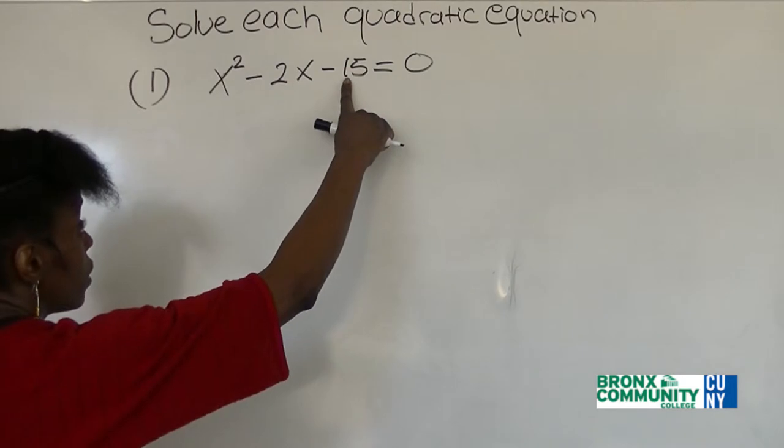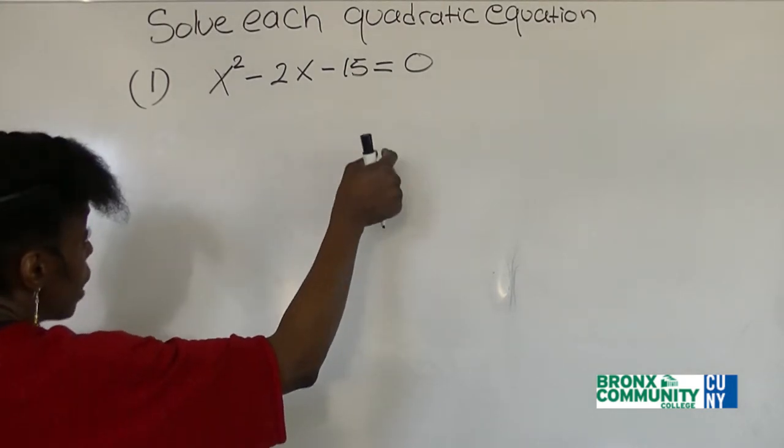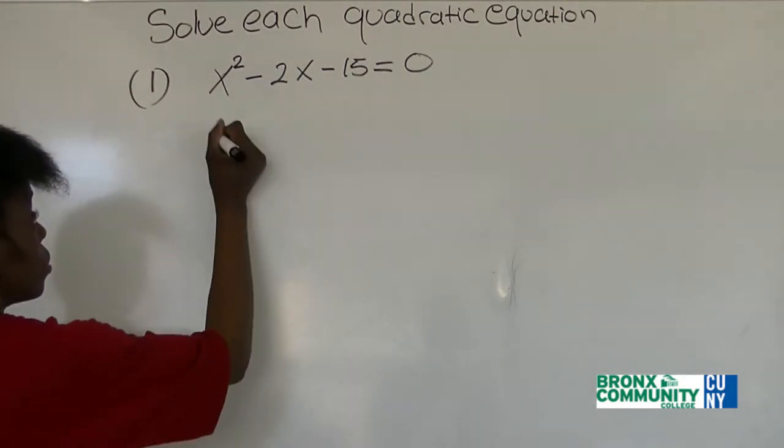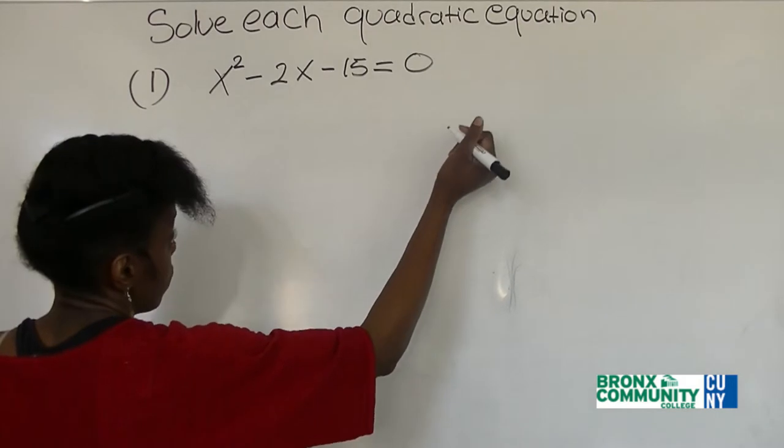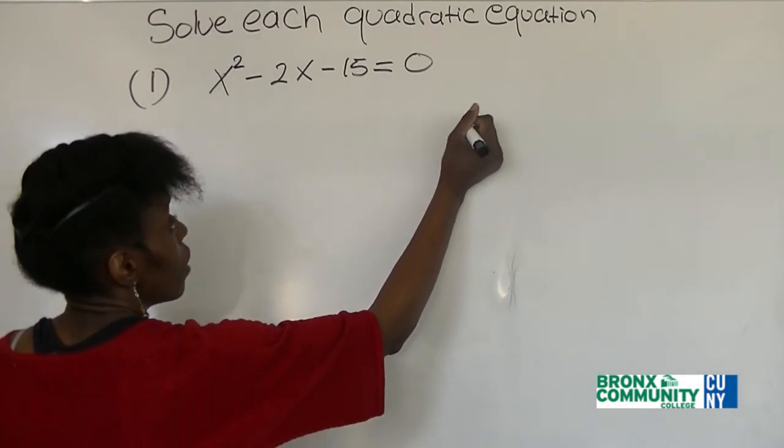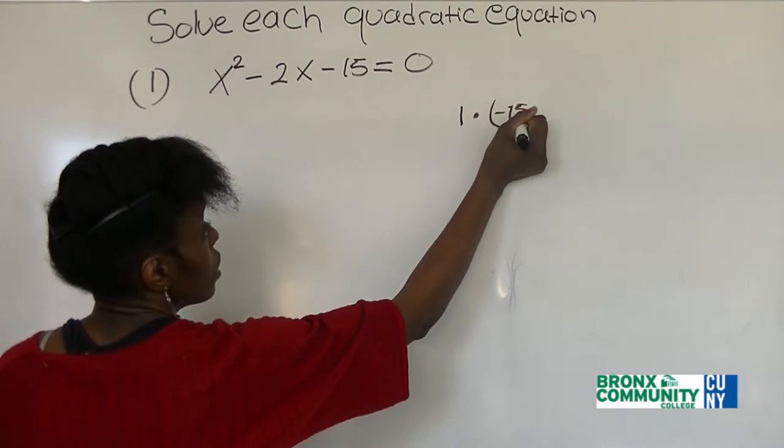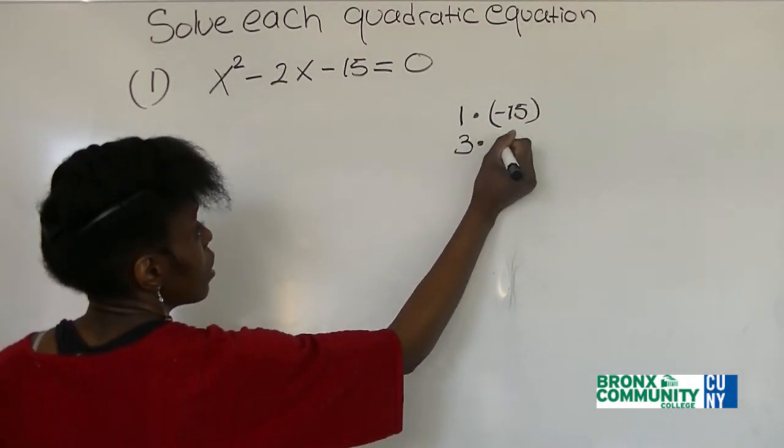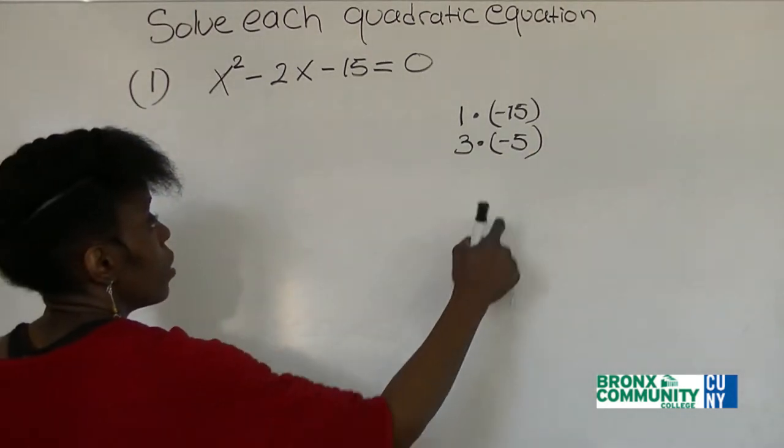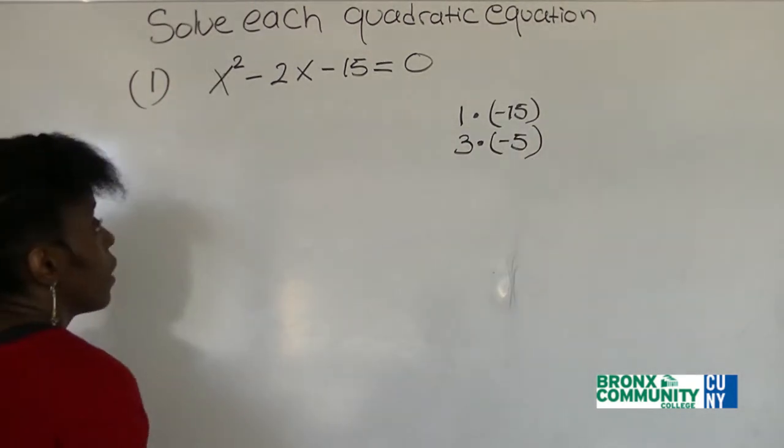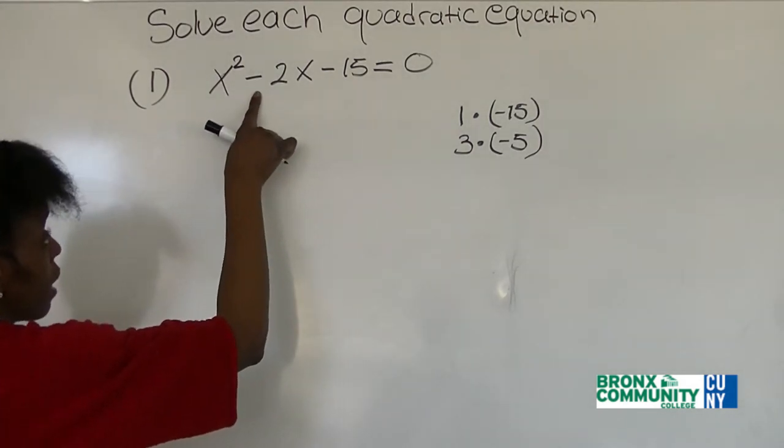We need to find factors of negative 15 that when we combine them will give us negative 2. So what are all factors of negative 15? We have 1 times negative 15 and we have 3 times negative 5. Notice that I put the negative number on the larger number. That's because I know that the larger number has to have a negative sign.